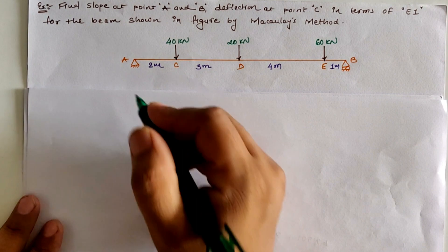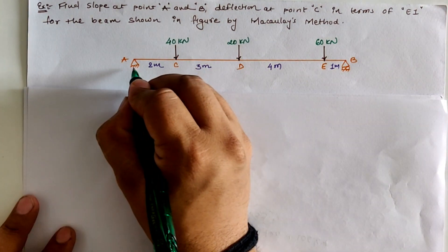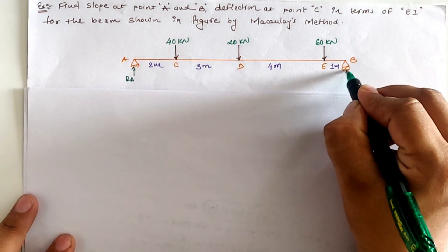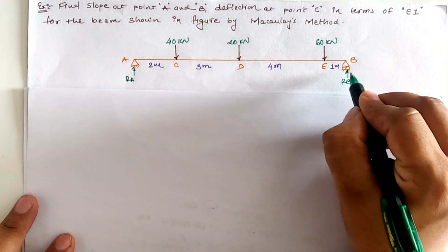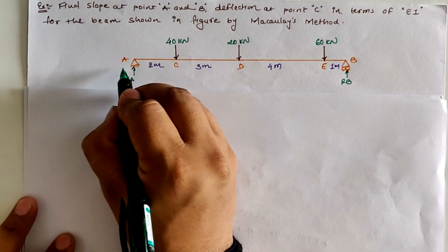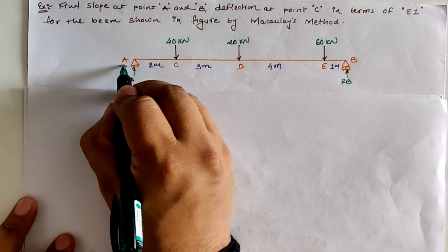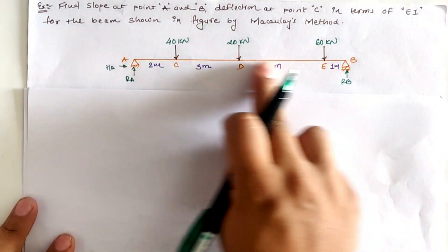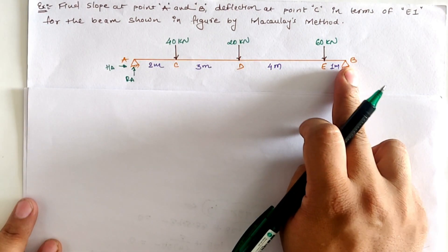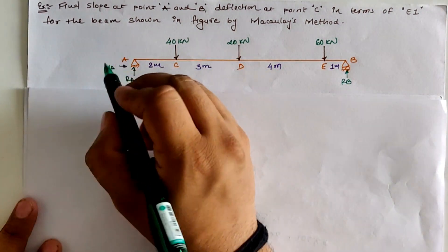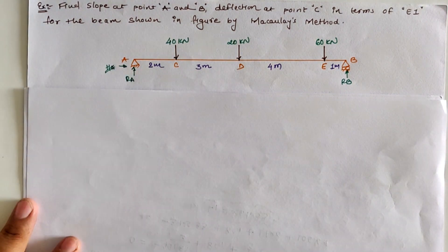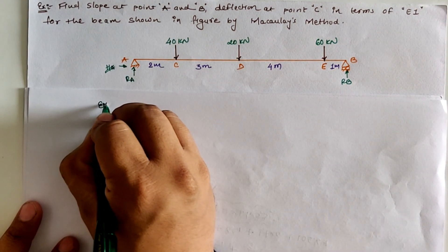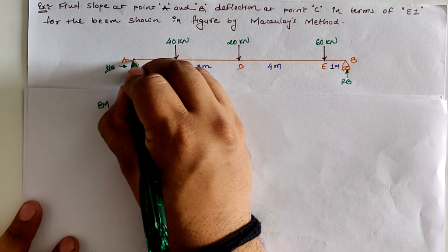At location A, the reaction is RA. At location B, the vertical reaction is RB and horizontal reaction is HA. However, due to the absence of horizontal loading as well as inclined loading, our value for HA is zero. So let us calculate the reactions using the three equilibrium conditions.